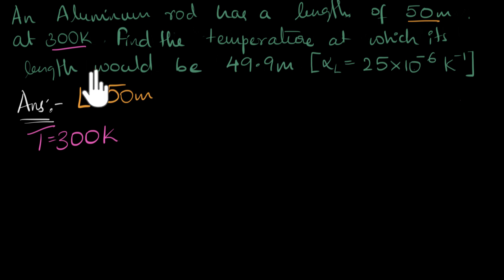Find the temperature at which its length would be 49.9 meters, which means the initial length is 50, the final is 49.9, so the change in the length, that's important for us, the change in the length required would be, let's see, how much is that, 49.9 minus 50, and that would be minus 0.1 meters.